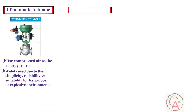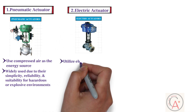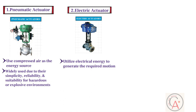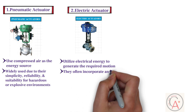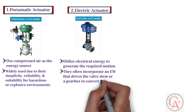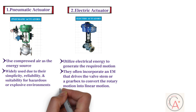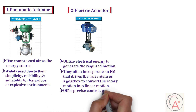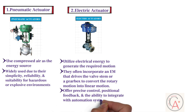The second type is the electric actuator. Electric actuators utilize electrical energy to generate the required motion. They often incorporate an electric motor that drives the valve stem, or a gearbox to convert rotary motion into linear motion. Electric actuators offer precise control, positional feedback, and the ability to integrate with automation systems.